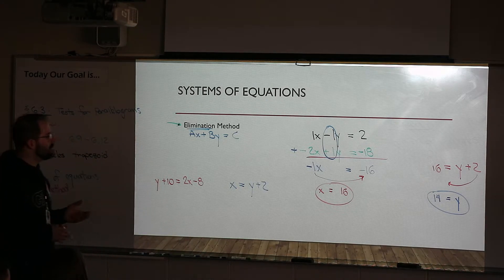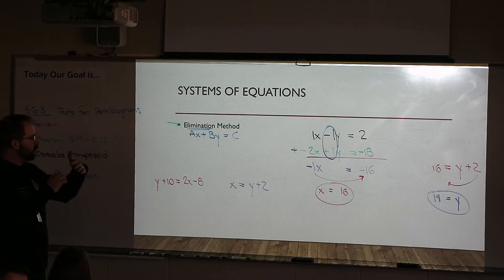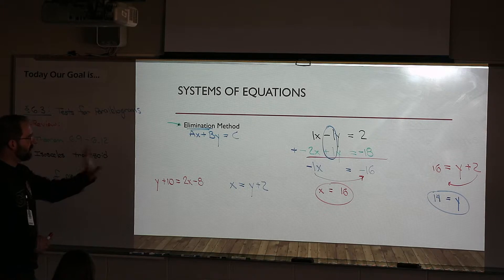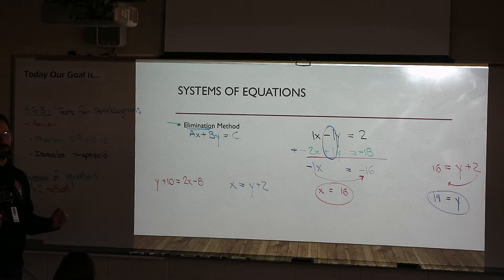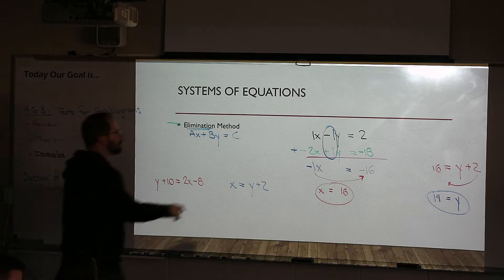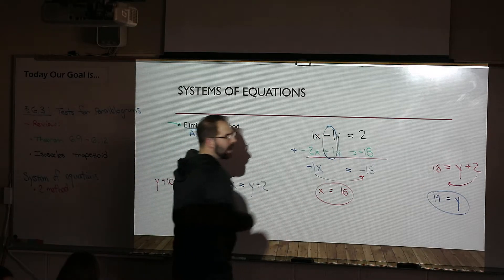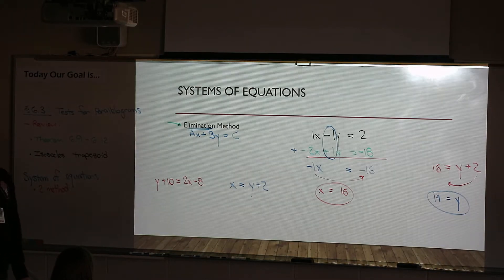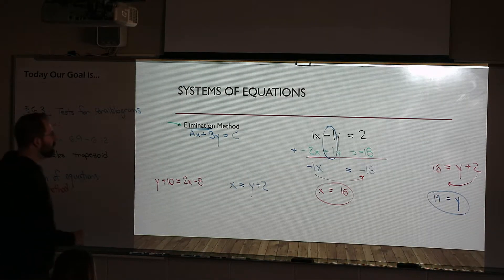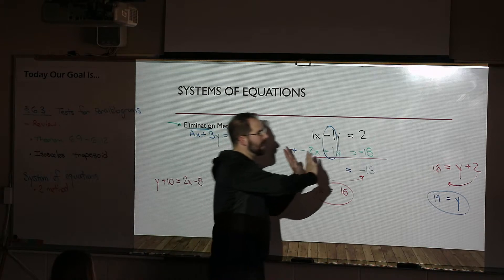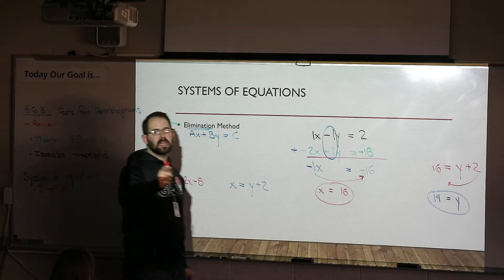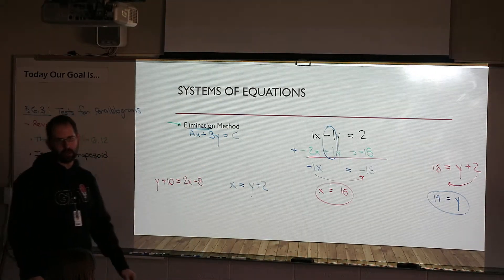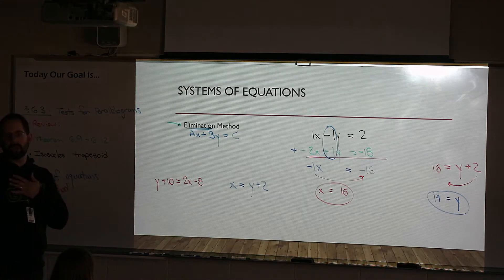That was the elimination method. Some people really like it — you rearrange the equations and add straight down. But some people find it has too many steps or aren't sure when to add straight down or change signs. That's when we use the second method.